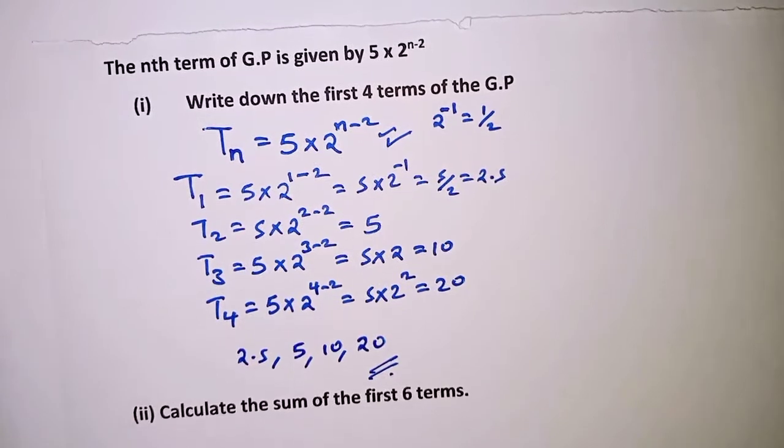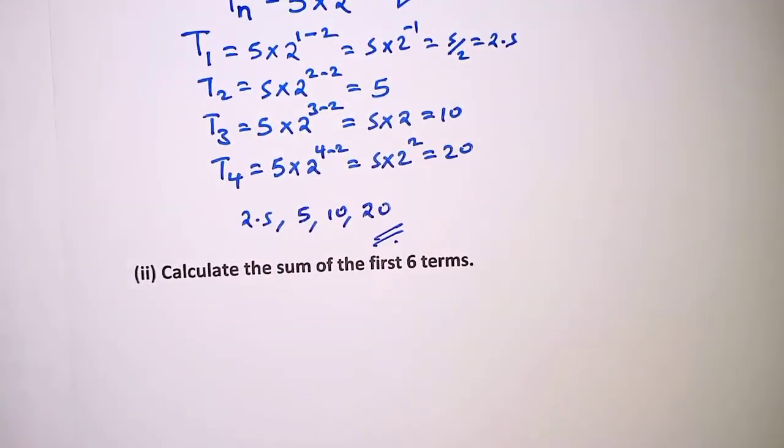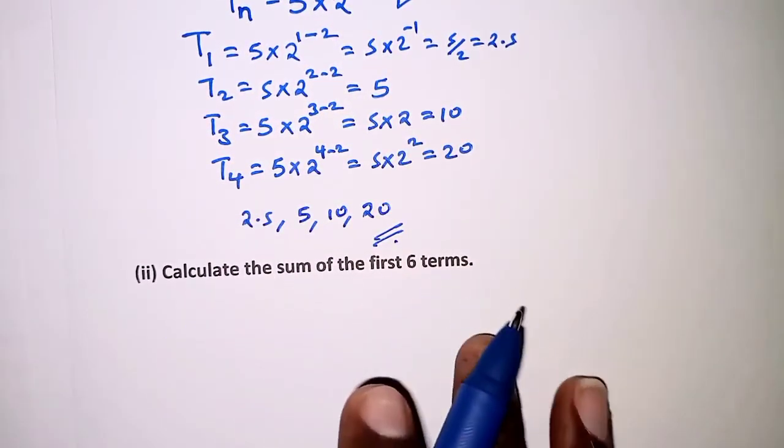So with the four terms already listed, the next part we are required to calculate the sum of the first six terms.